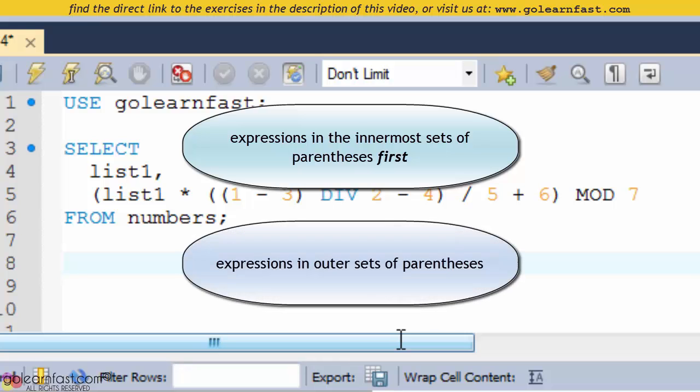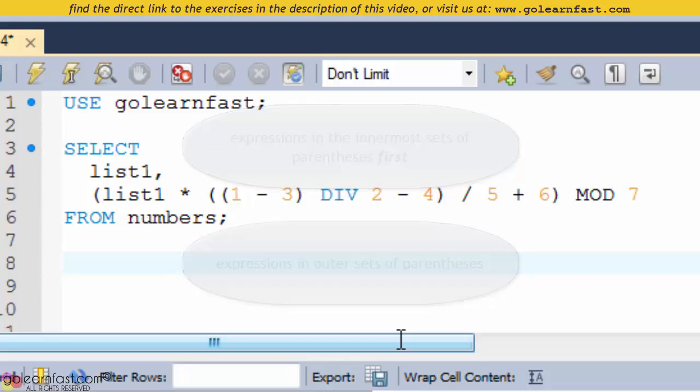Followed by the expressions in other sets of parentheses. So this is evaluated first because it's the first innermost set of parentheses. Then comes this, and finally this.